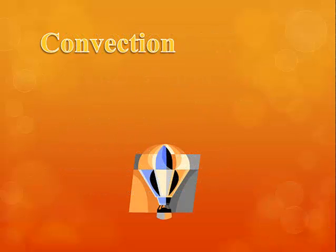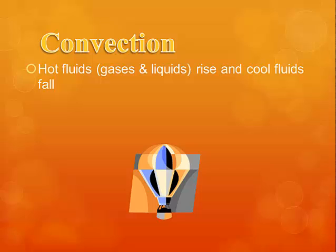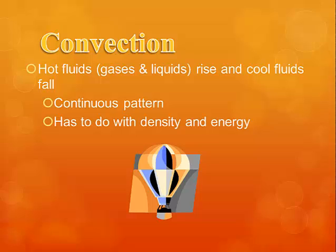The next type is convection, which involves fluids — gases and liquids — that rise and fall. In your house, the upper levels tend to be warmer than the lower levels because heat rises: as we add energy to particles, they become less dense than the cooler air and flow up. The same thing happens with water — hot water stays at the top and cooler water falls to the bottom. Hot air balloons are a great example of convection currents. It's a continuous pattern of adding and removing energy, causing particles to rise and fall, driven by density and energy.